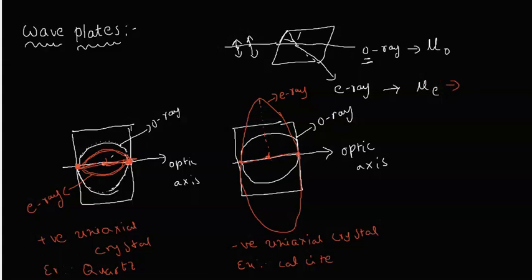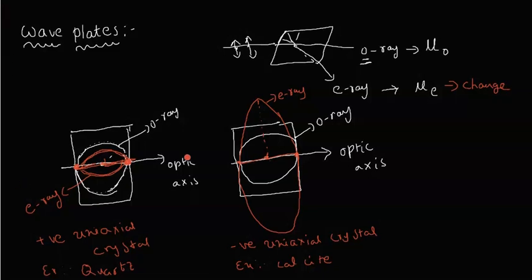If the speed changes, the refractive index will change. So, based on the path difference between the ordinary ray and the extraordinary ray, we introduce the concept of wave plates. Wave plates are of two kinds: the quarter wave plate and the half wave plate.